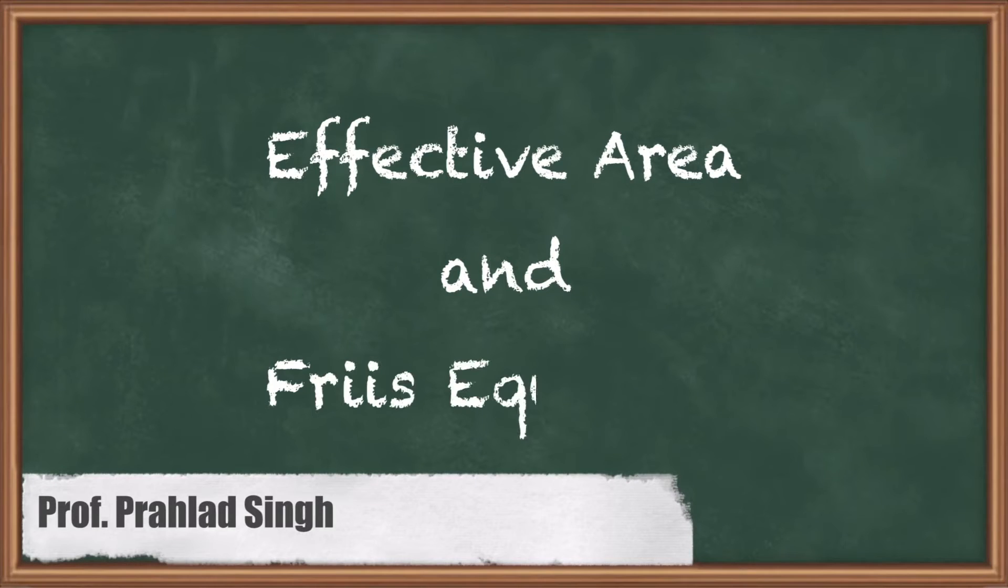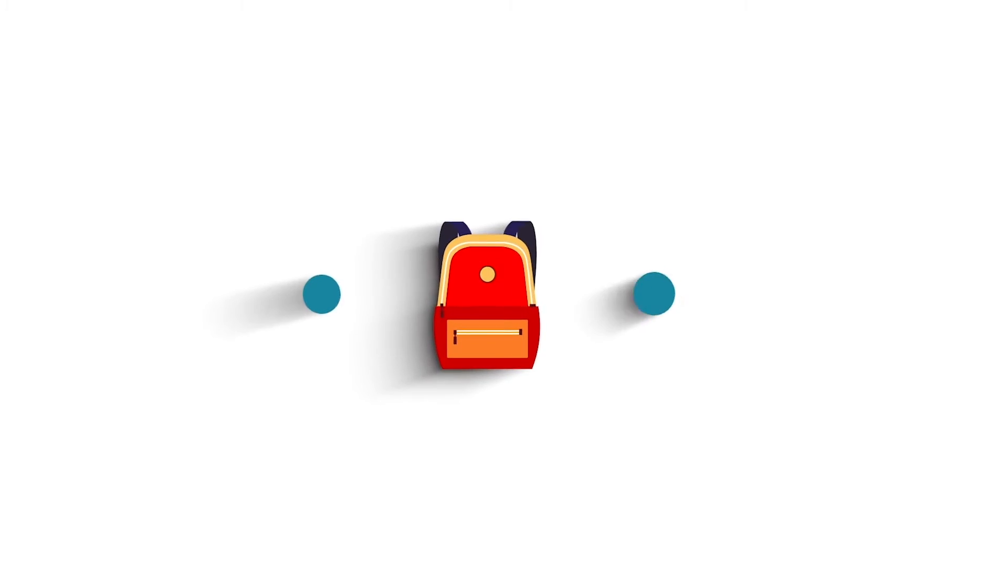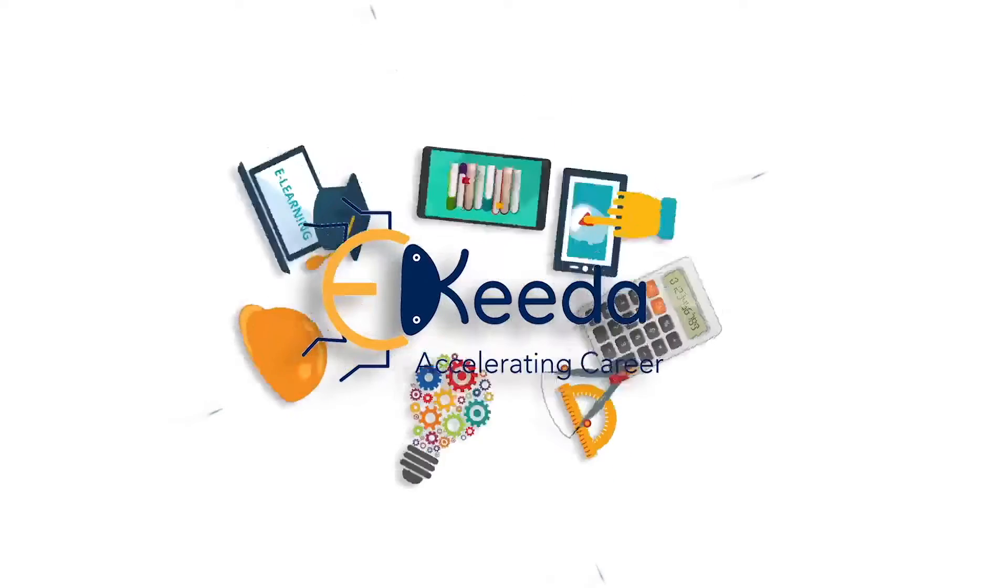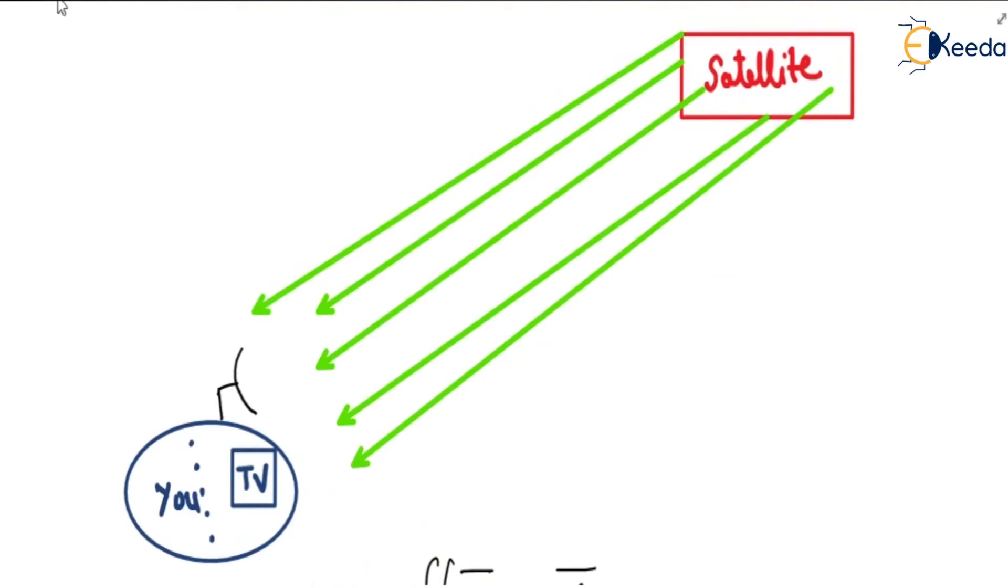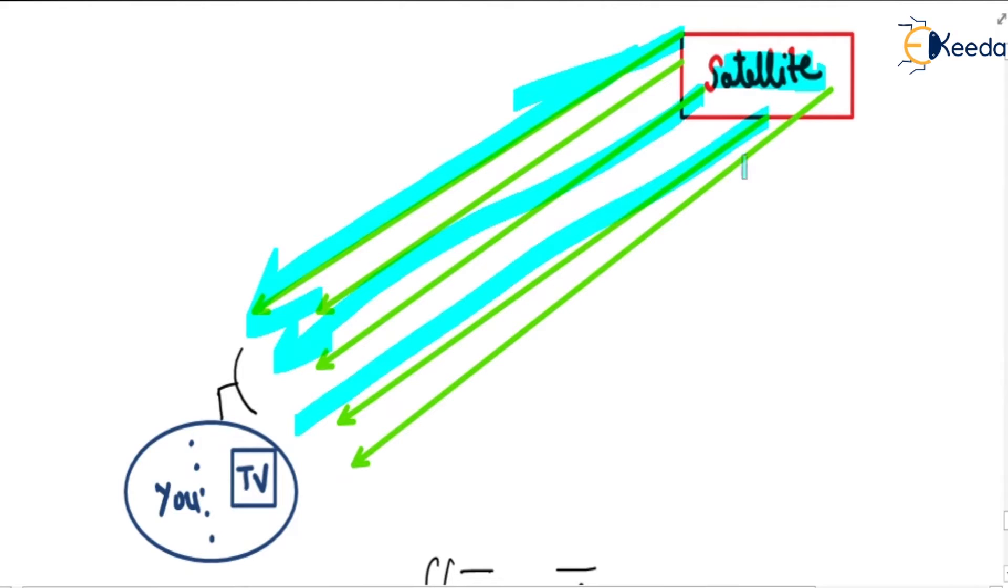Hello students, in this video we will discuss effective area and Friis equation. Suppose this is a satellite sending electromagnetic waves in all directions. This is you with your TV set, and here the parabolic receiver is placed.